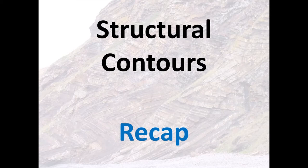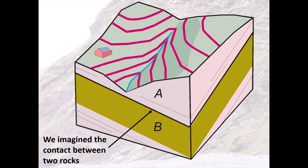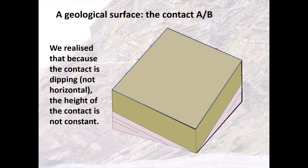To start our recap, when we introduced structural contours we introduced them using this block diagram, and we asked ourselves to imagine this contact — this plane of contact between units A and B. You can see the block diagram and its cross sections on two sides, and hopefully you can convince yourselves that that contact is inclined. The contact between A and B is dipping towards us, and because it's dipping and not horizontal, the height of the contact is not constant — it will change.